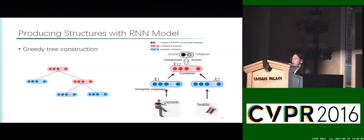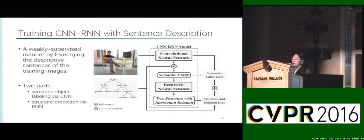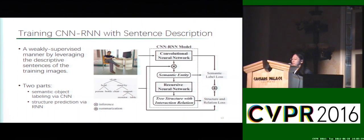The algorithm iterates until there is only one root node left. Our scene parsing training includes two parts: the first is semantic object labeling, and the second is structure prediction. In the initial state, we first convert each sentence into a parsed tree, including entities and relations. Generalized segmentation masks for entities are inferred using the image description and parsing outputs. The recursive neural network produces a tree structure with interaction relations. In total, the semantic label loss and the structure relation loss are jointly optimized.